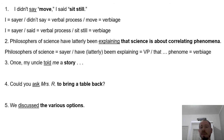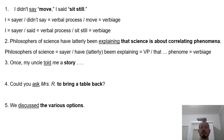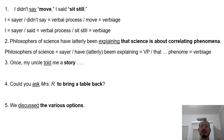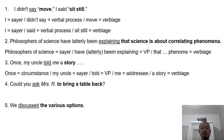Oh, here there is a typo — it's 'phenomena.' 'Once my uncle told me a story.' Let's start with 'once' — once is a circumstance. 'My uncle' is the sayer. 'Told' is the verbal process. And 'me' — what is me here? I'm telling something to somebody else, so 'me' is the addressee or receiver. 'A story' is what is told, so it's the verbiage.